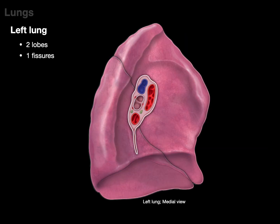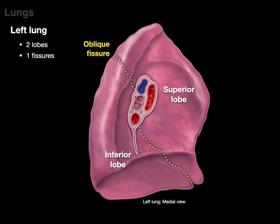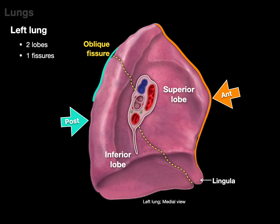Looking at the medial view of the left lung, there's the superior and inferior lobes separated by the oblique fissure, and the lingula sticking out. Similar to the right lung, the superior lobe of the left lung is auscultated from the front of the chest wall, and the inferior lobe from the posterior chest wall, because of where each lobe is located.